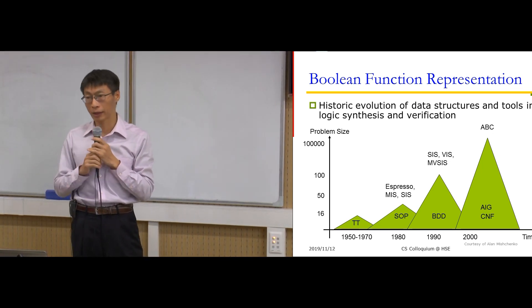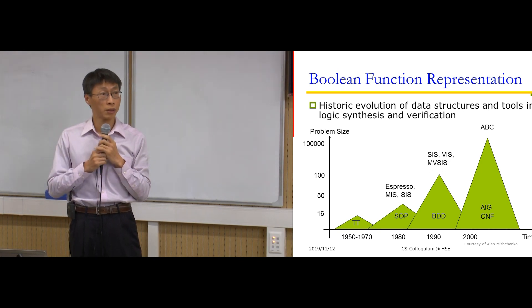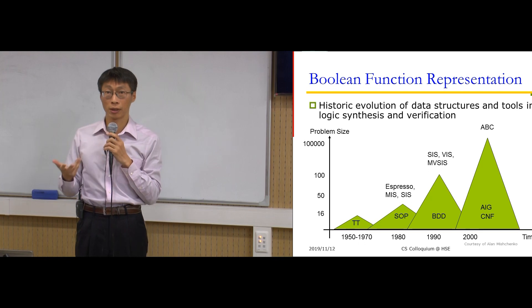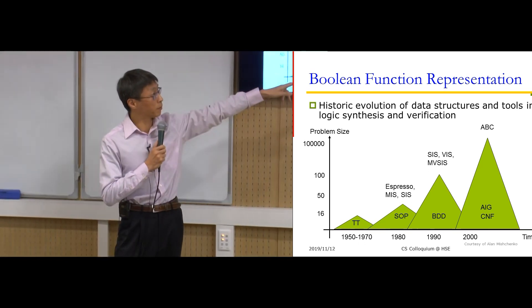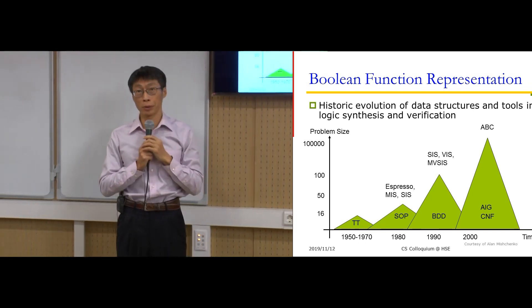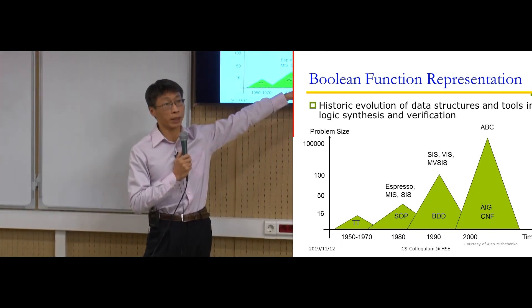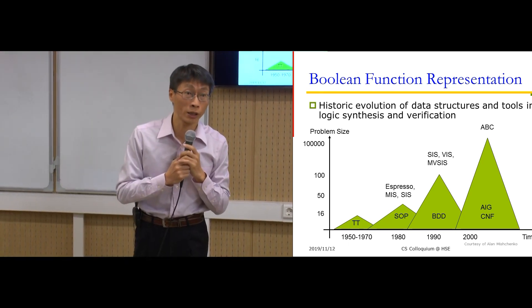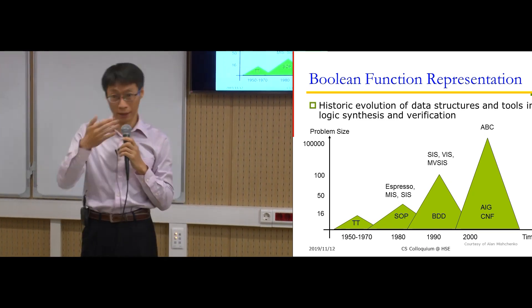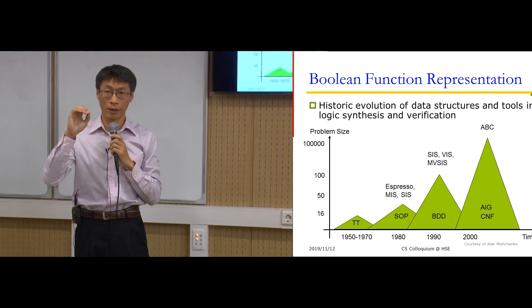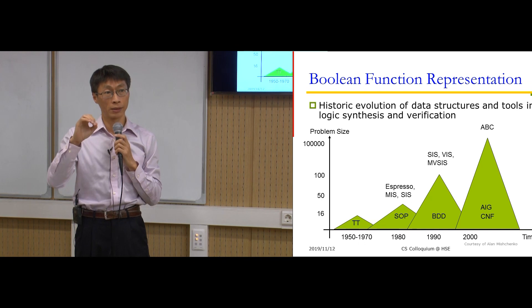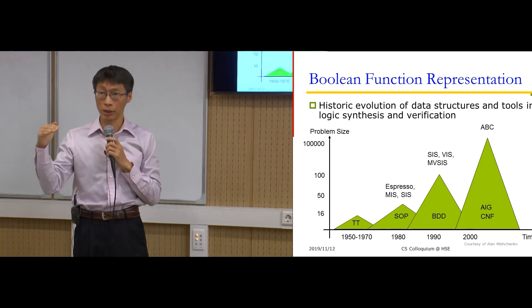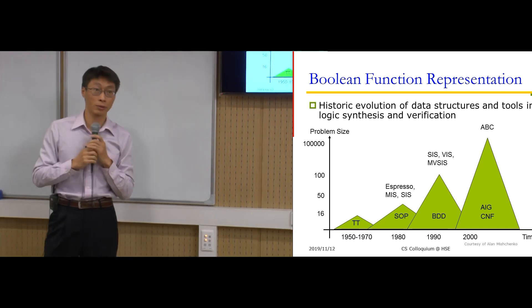In the late 1990s and starting from 2000, people began using SAT solving to manipulate Boolean functions. Here we mention CNF — conjunctive normal form representation. In the circuit domain, we would use AIG, which stands for And-Inverter Graph, to represent a Boolean function. Basically, it's a Boolean network where every node has only two inputs, each node is a two-input AND gate, and the inverter can be just an attribute on the edge.